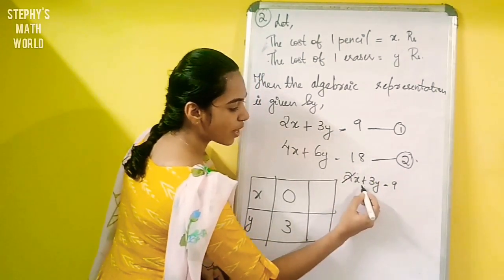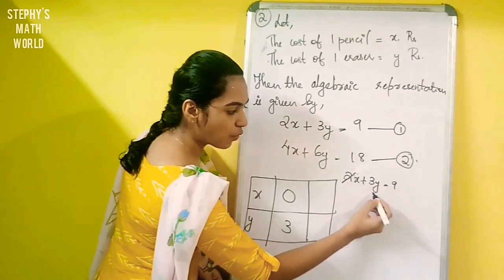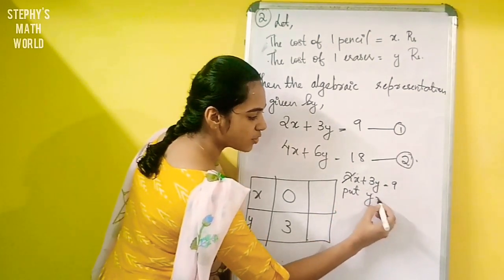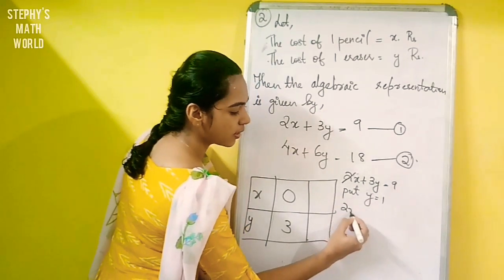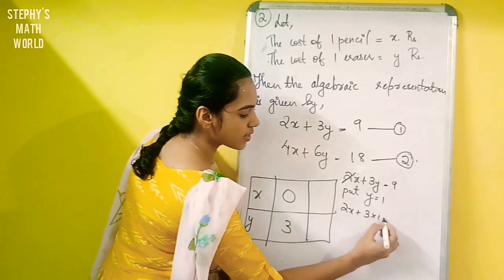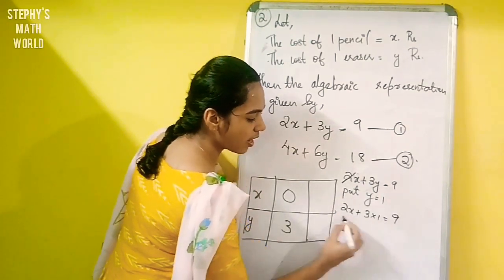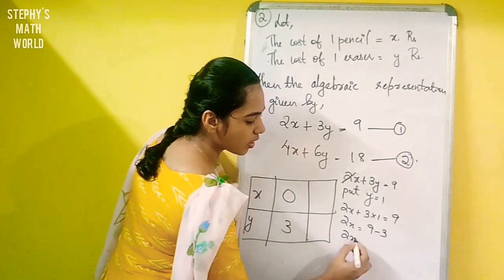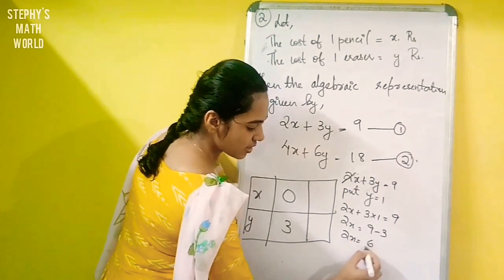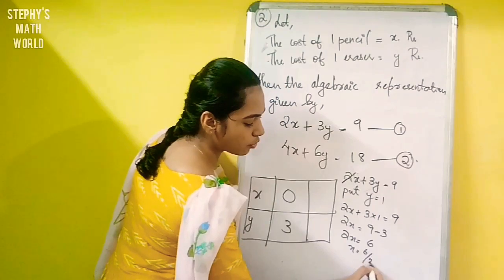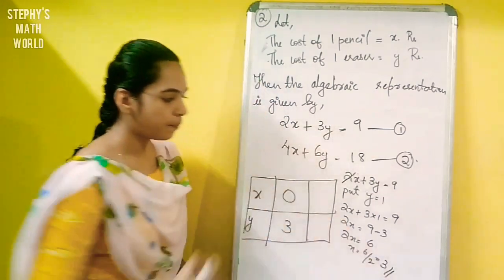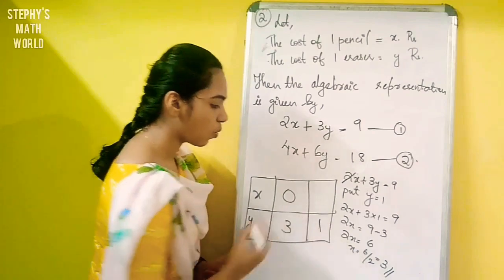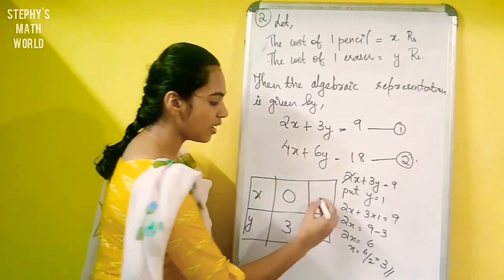Now, 2x plus 3y is equal to 9. Let y be equal to 1. Then 2x plus 3 into 1 is equal to 9. So 2x is equal to 9 minus 3. 2x is equal to 6 and x is equal to 6 by 2, which is equal to 3. So when y is equal to 1, x is equal to 3.